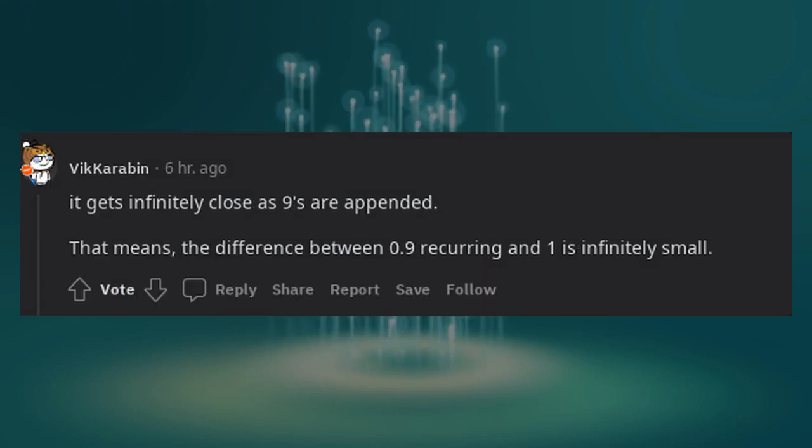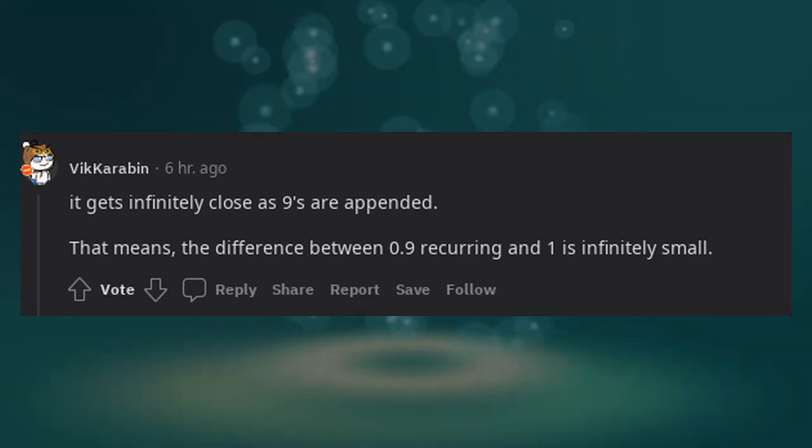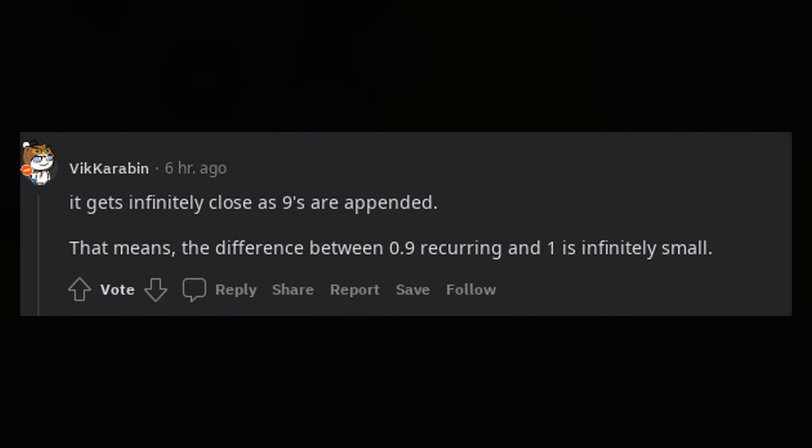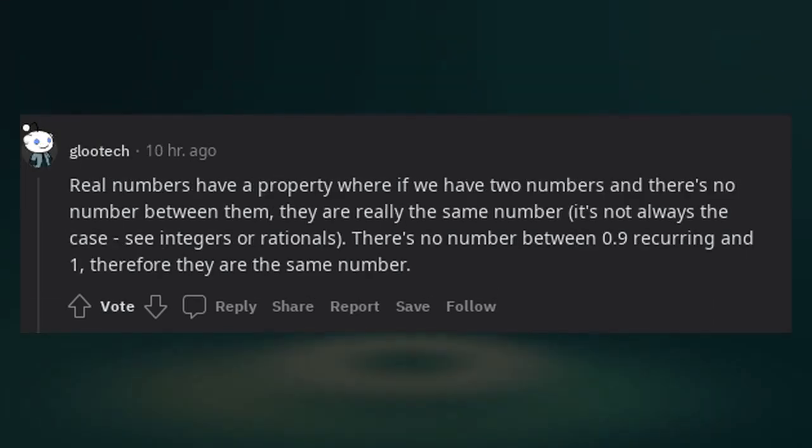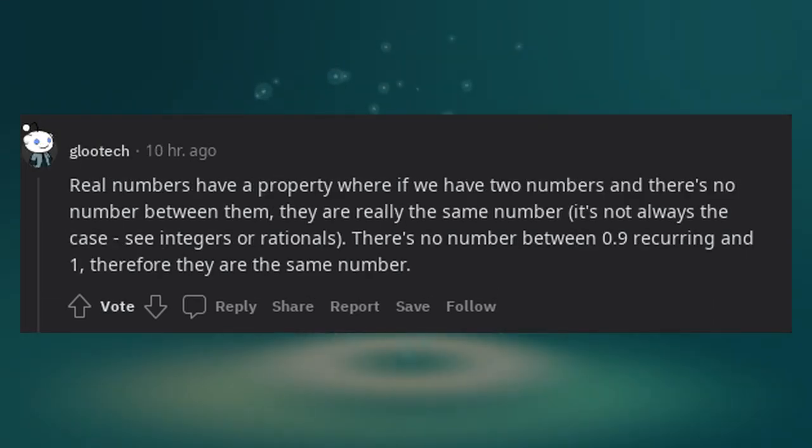It gets infinitely close as 9's are appended. That means the difference between 0.9 recurring and 1 is infinitely small. Real numbers have a property where if we have two numbers and there's no number between them, they are really the same number. It's not always the case—see integers or rationals. There's no number between 0.9 recurring and 1, therefore they are the same number.